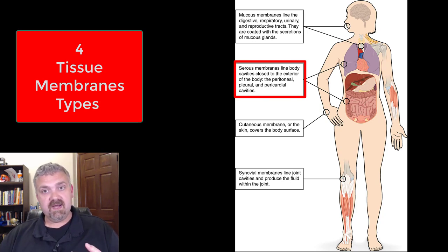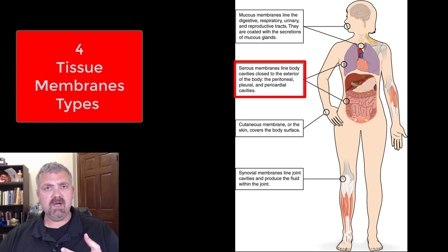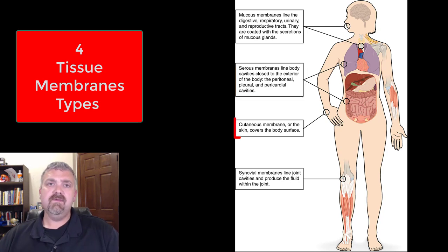Serous membranes are going to line the cavities that are inside your body that aren't exposed to the exterior. These would be your ventral body cavities like your pericardial cavity, peritoneal cavity, and your pleural cavity.